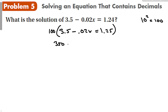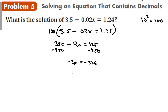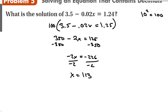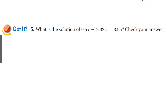Multiplying by 100 gives me 350 minus 2x equals 125. I subtract 350 from both sides, which gives me negative 2x equals negative 225. Divide both sides by negative 2, and we get x equals positive 113. This is useful if you want to solve a problem like this without a calculator, which you will have to do on some standardized tests.